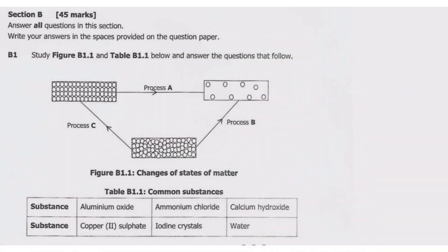Welcome viewers to another episode on ASUG 12 exams. This is the second episode in this series where we are focusing on the 2020 internal science paper 2, which is chemistry. Let us look at question B1 from section B. We are expected to answer all the questions and this section carries 45 marks.